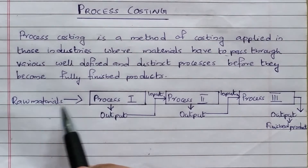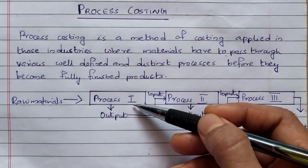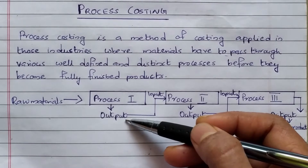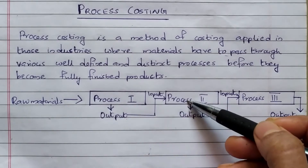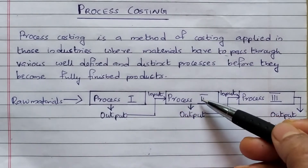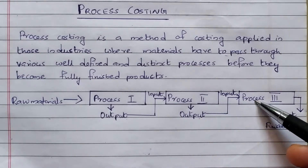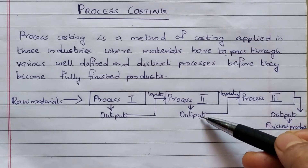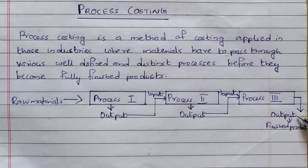We take raw materials into Process 1. When Process 1 is complete, the output is taken to Process 2 as its input. Process 2 output then goes to Process 3 as its input. When Process 3 is complete, we have finished the raw materials converted into a finished product.